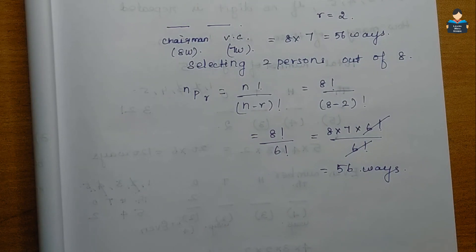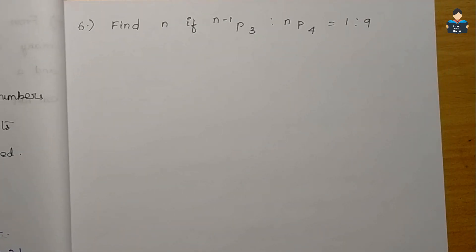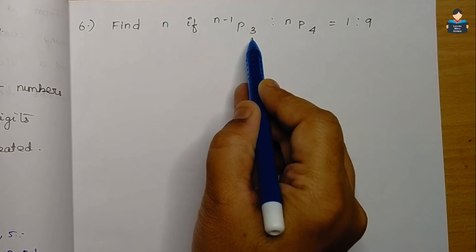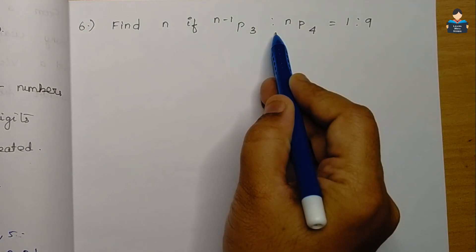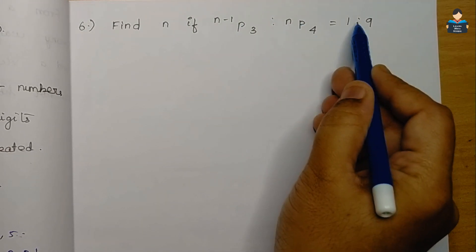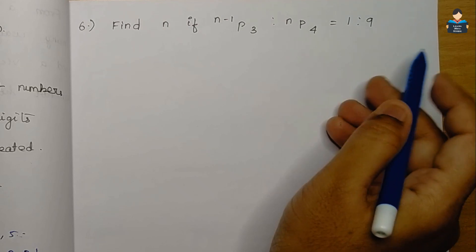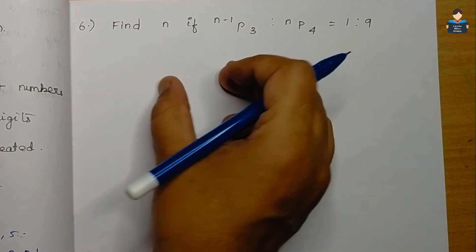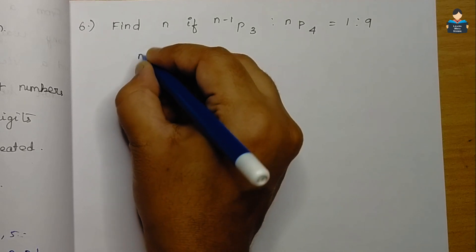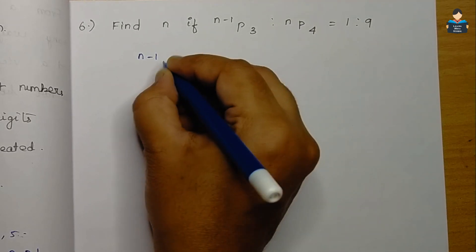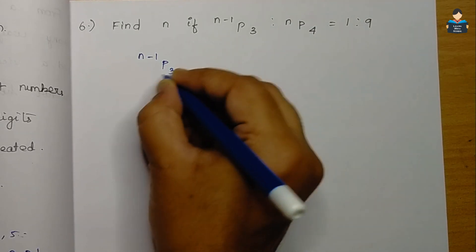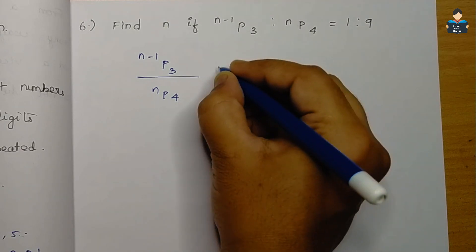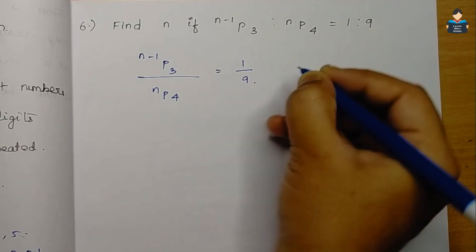Next is question 6: Find n if (n-1)P3 : nP4 = 1 : 9. So the ratio (n-1)P3 to nP4 is equal to 1 by 9.